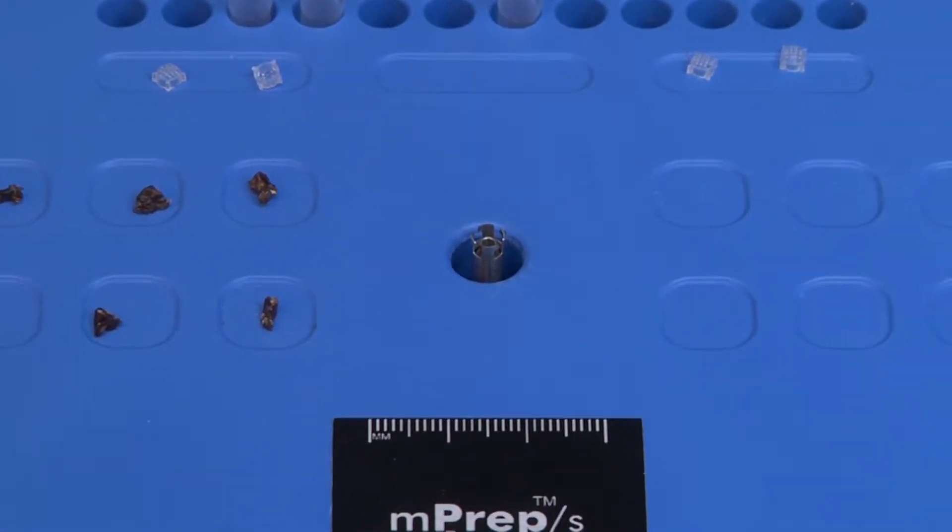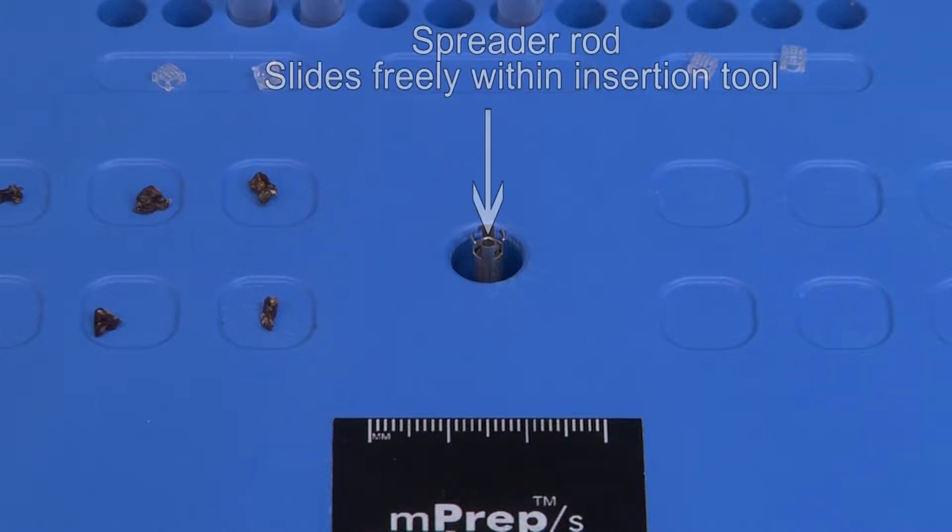The MPREP screen insertion tool is located in the center of the workstation. Within the insertion tool is the spreader rod. This rod moves up to spread apart the screen, to open a slit that is used to pinch mount specimens.